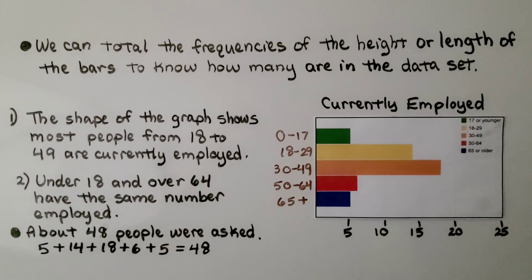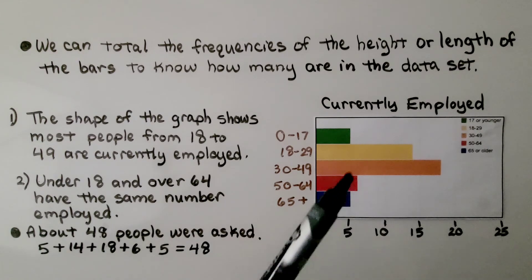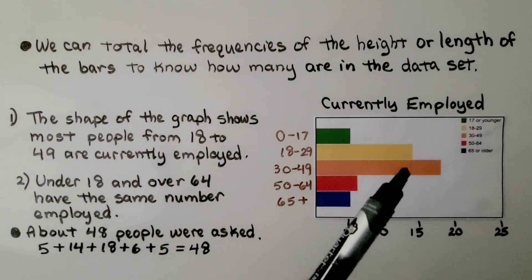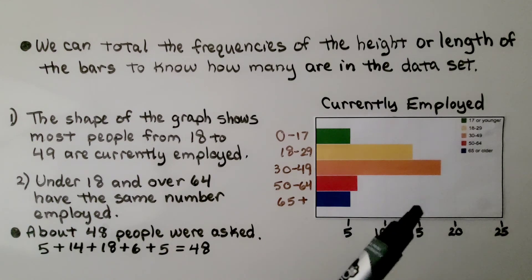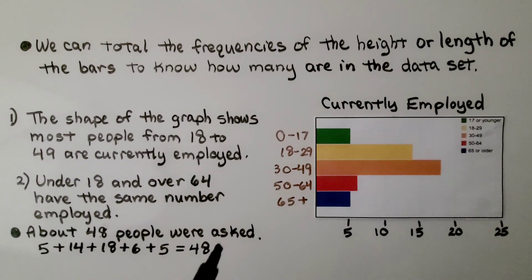There's about 48 people that were asked, we have a 5, we have a 14, we have an 18, we have a 6 and another 5, we add them together, that's 48. So probably 48 random people were asked if they're currently employed. And this histogram was made from the data values.